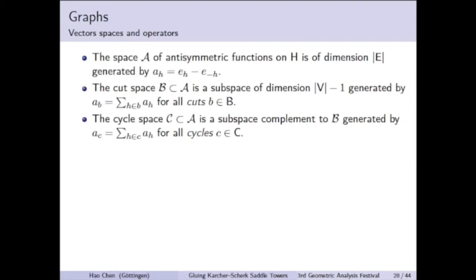In the real valued edge space, which we define here as A, the cut space is the subspace generated by the characteristic vectors of cuts, and the cycle space is the subspace generated by the characteristic vectors of cycles. These two subspaces are actually complementary to each other.